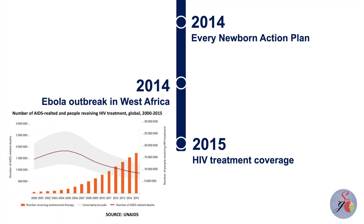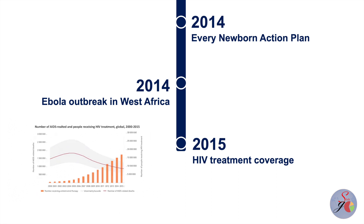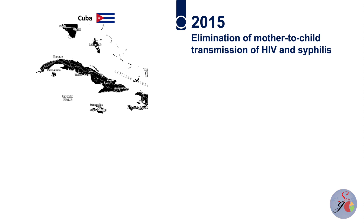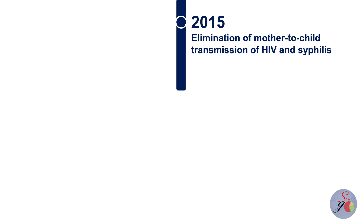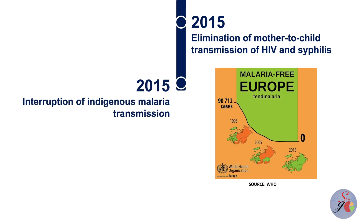HIV treatment coverage expanded rapidly, with well over 17 million people living with HIV on antiretroviral therapy by the end of 2015. In 2015, Cuba became the first country in the world to receive validation from WHO that it had eliminated mother-to-child transmission of HIV and syphilis. In the same year, the WHO European region became the first region in the world to achieve the interruption of indigenous malaria transmission.